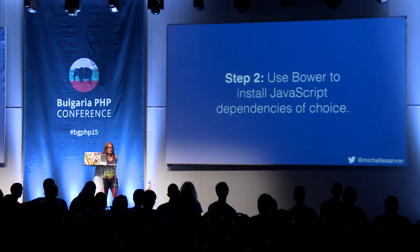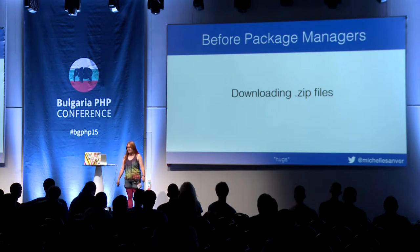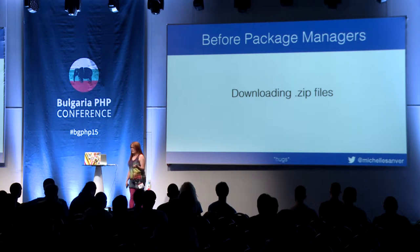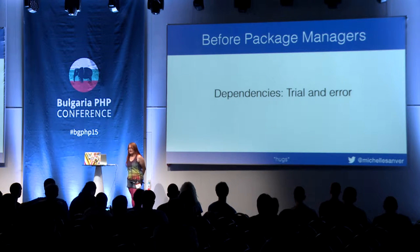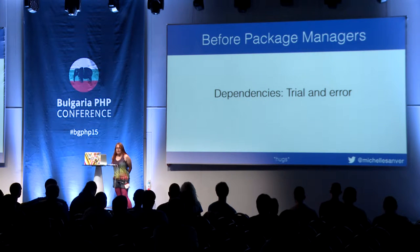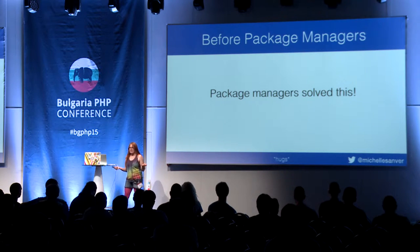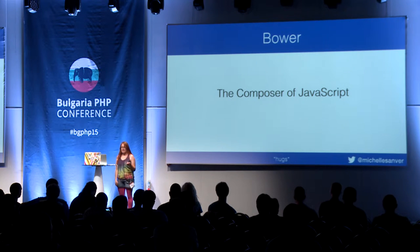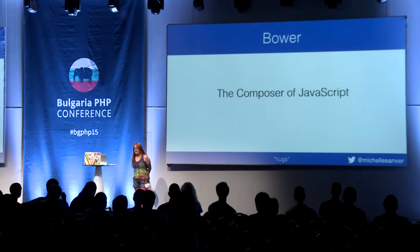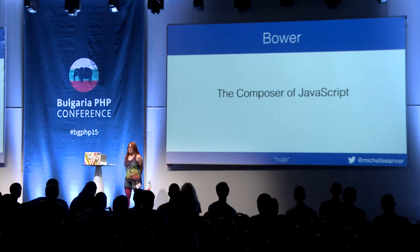Use Bower to install JavaScript dependencies of choice. Before package managers, we had to download zip files or use CDNs, and it wasn't really handy to manage dependencies — it was trial and error figuring out which versions you should have. It got annoying after a while, and that's why I started looking for other solutions. Package managers are the solution — they're the Composer of JavaScript. I chose to go with Bower for now, but there are many others including NPM itself.